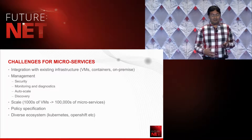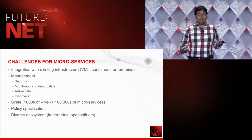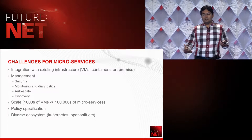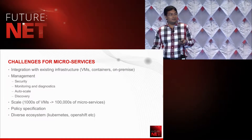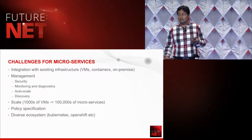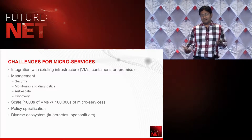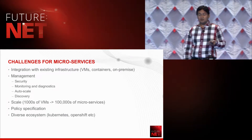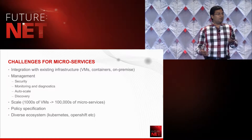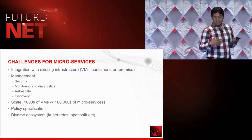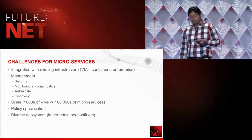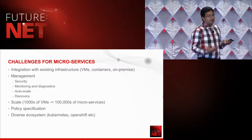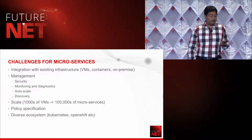Traditionally, customers have had to manage thousands of VMs, but now that has translated into hundreds of thousands of microservices. One challenge is running out of IP addresses — how do you manage the IP address space for so many microservices? Policy specification is another challenge: how do you specify policies around isolation and security? And there's a diverse ecosystem — Kubernetes, OpenShift — so customers are continuously challenged with which ecosystem to pick.